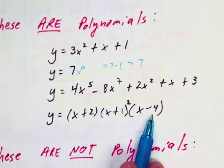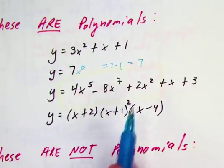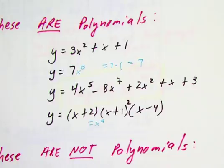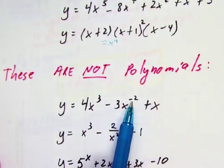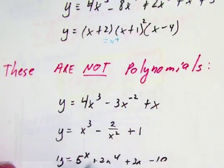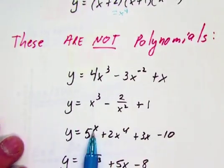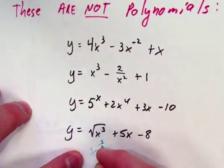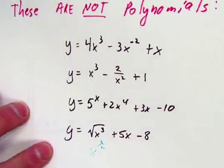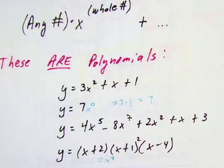Things that are not polynomials include expressions with negative exponents, x in the denominator (which flips to a negative power), x in the exponent itself, and square roots — since a square root is like x to the three-halves power. If they don't have a nice whole number exponent, we kick them out — they're not polynomials.